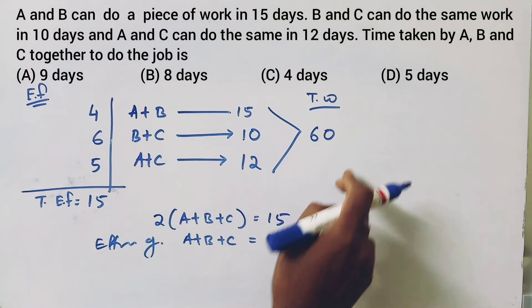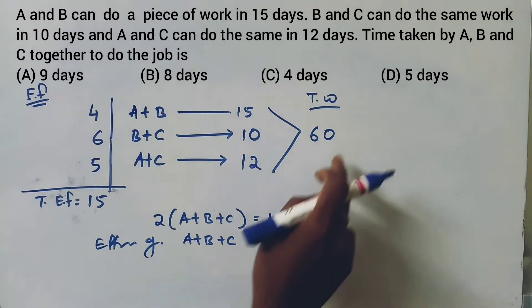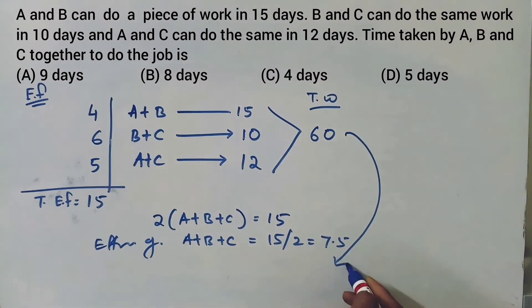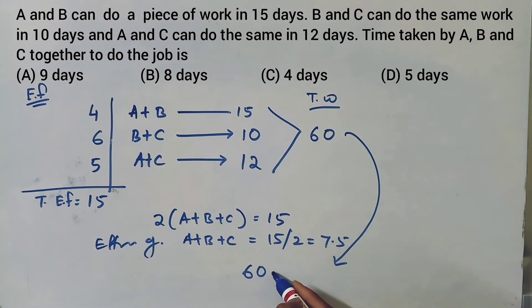So how many days will A plus B plus C take to complete the work? We take 60 divided by 7.5, which equals 60 times 10 divided by